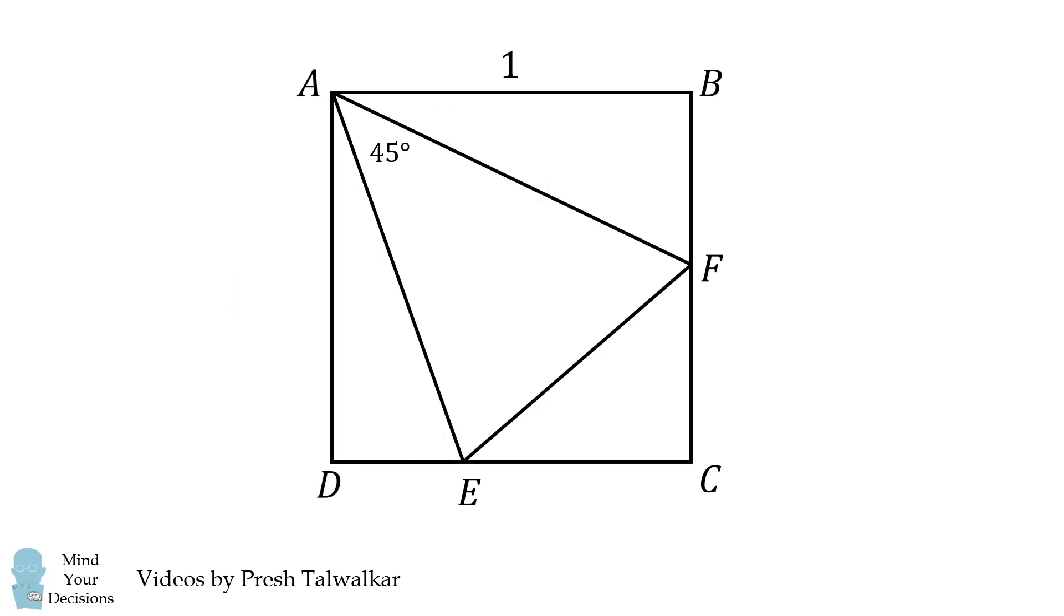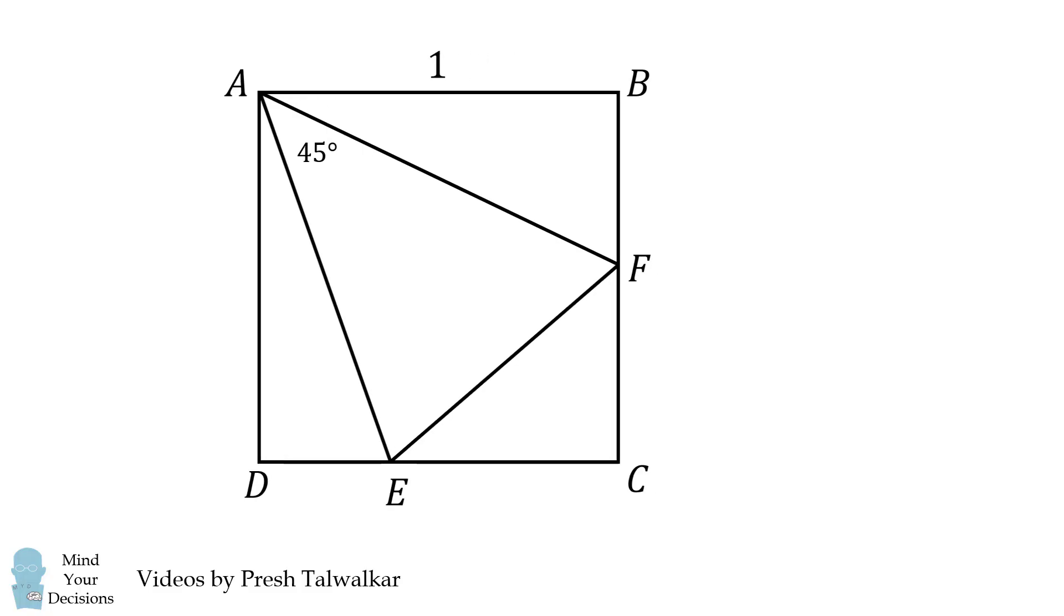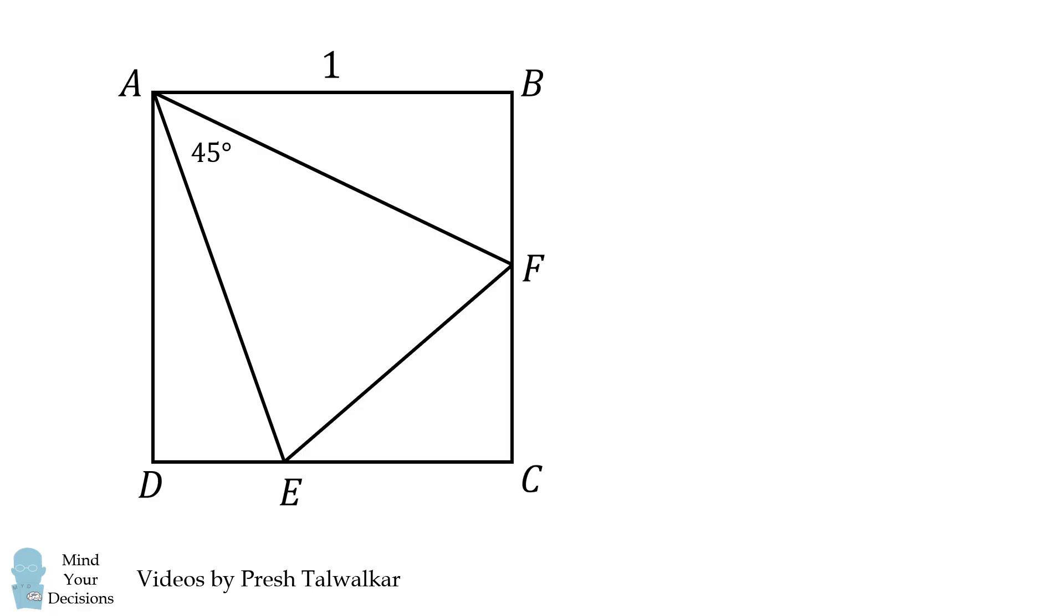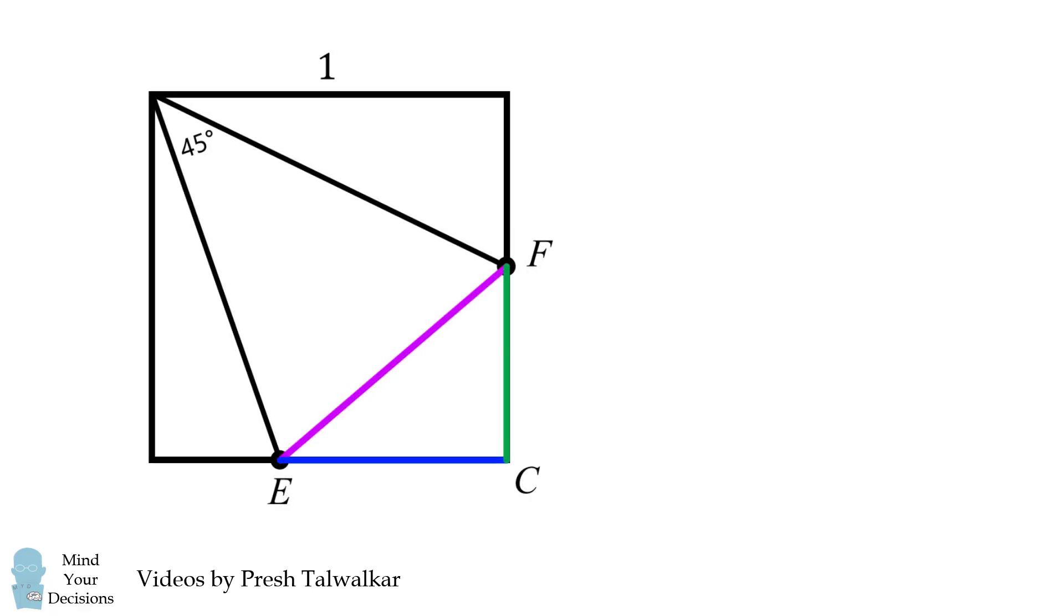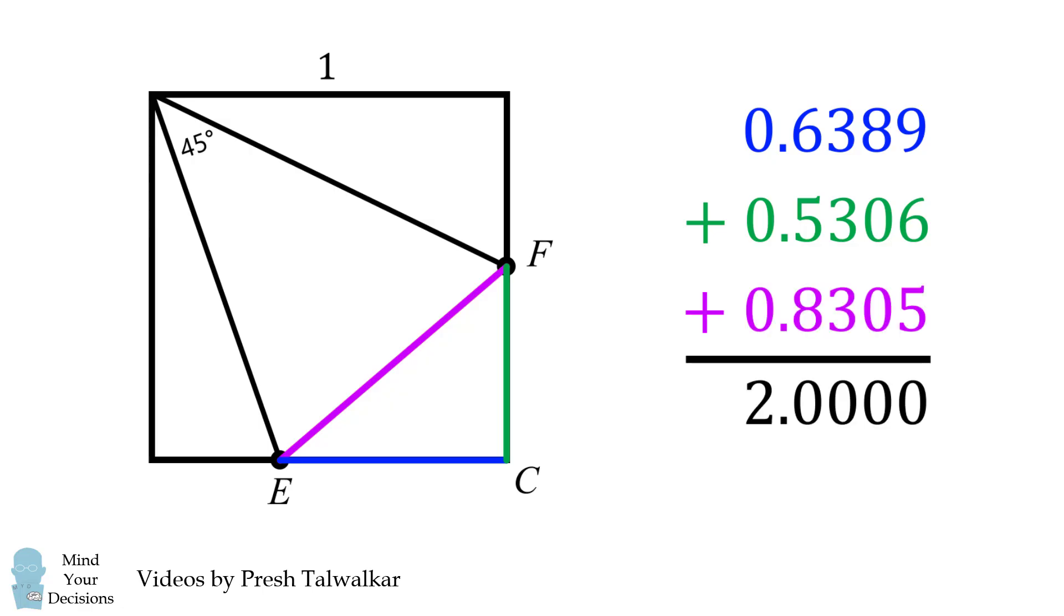Now let's solve the second part of the question. What is the perimeter of triangle ECF? Let's consider a numerical approach. Imagine that we have a ruler and that we can measure the length of EC. Suppose we estimate it to be 0.6389. Let's do the same thing for the other sides CF and FE. We find that the sum of these three lengths will be equal to 2.